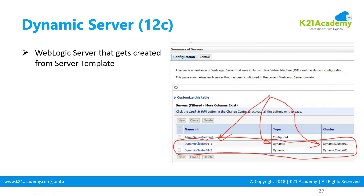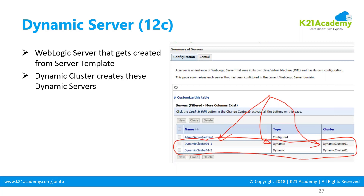Dynamic servers are servers that get created using the server template by the dynamic cluster. The dynamic cluster, based on load, will dictate that more managed servers of type dynamic should be created using a template, which will be automatically created. The administrator can also manually create these dynamic servers. In the console example shown, a dynamic cluster has already been created with two dynamic servers. When you create and define a cluster, it creates these dynamic servers — the type shows as 'dynamic', meaning there is one admin server and two dynamic managed servers in this domain, created by the dynamic cluster.